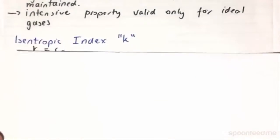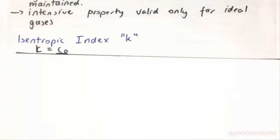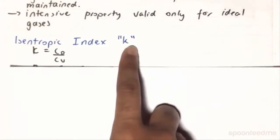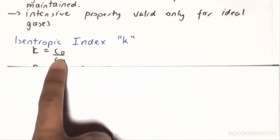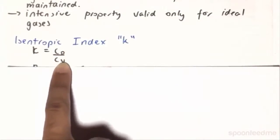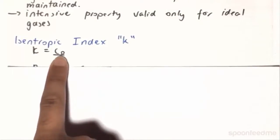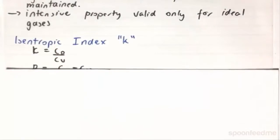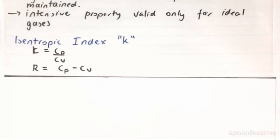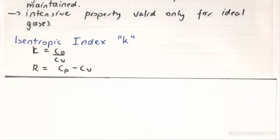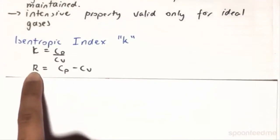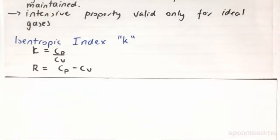And finally, we look at the isentropic index, which is denoted by the letter K. The isentropic index is defined as Cp over Cv. So it is a constant ratio, and it differs from gas to gas, as Cp and Cv also differ from gas to gas. And this Cp and Cv are also related to the gas constant of an ideal gas by this equation here: R equals Cp minus Cv.